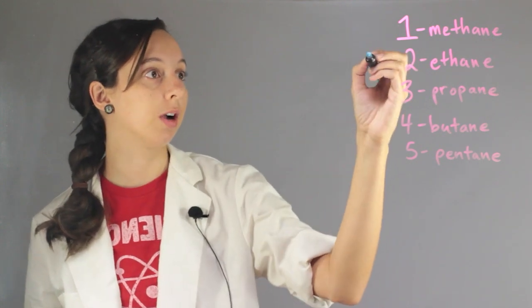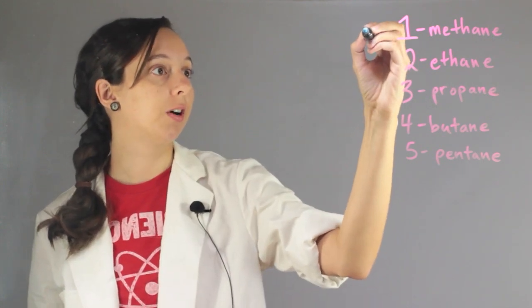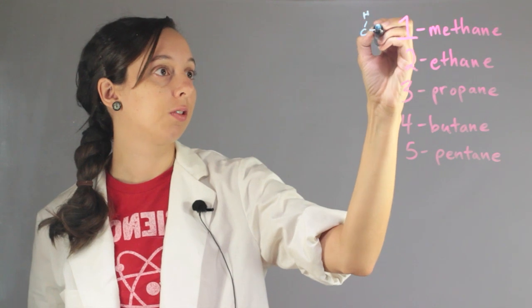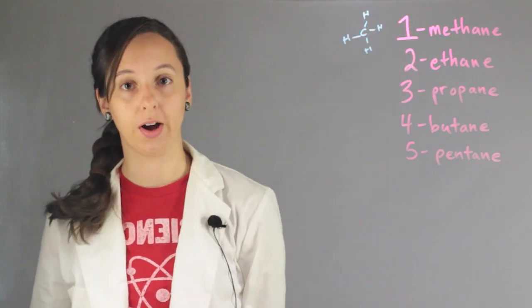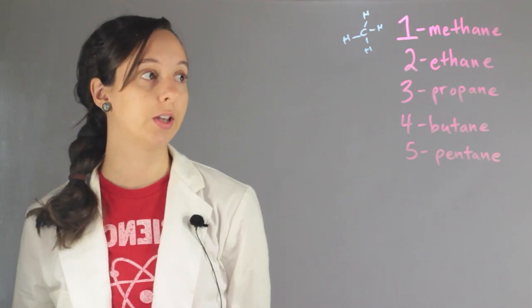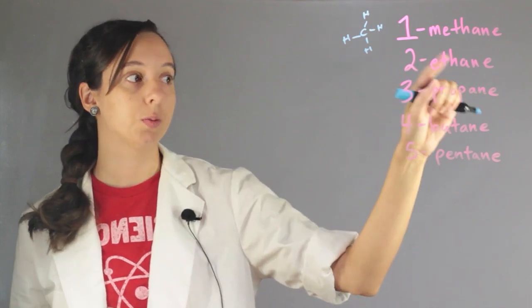So methane just has one carbon and so its structure will look like this. Remember carbon always makes four bonds in alkane, all single bonds. And then ethane has two carbons, propane has three.